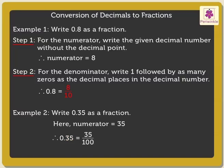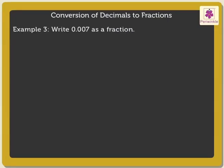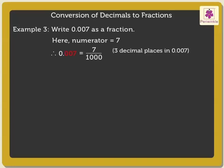Now let's solve one more example: 0.007. The zeros do not carry value, thus we write the numerator as 7. We write the denominator as 1000 since there are three decimal places in the decimal number. Thus we get the answer as 7 upon 1000.